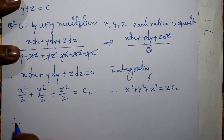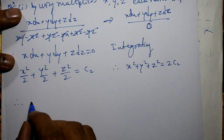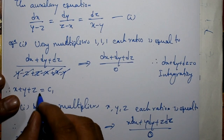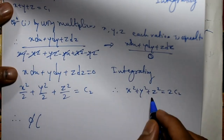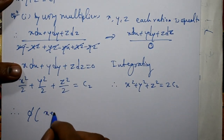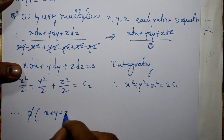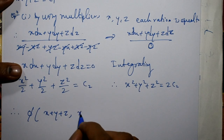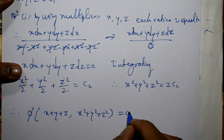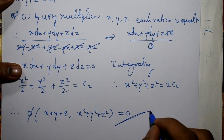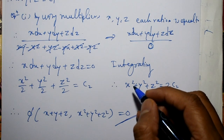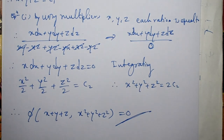Therefore the general solution is phi(u, v) equal to 0, where u equals x plus y plus z, and v equals x squared plus y squared plus z squared. This is the required general solution of Lagrange's linear PDE.